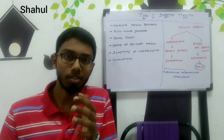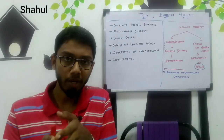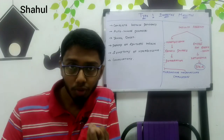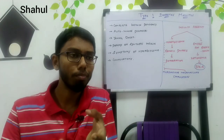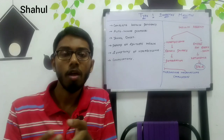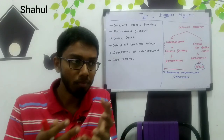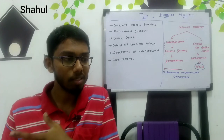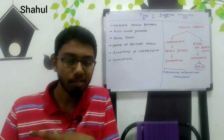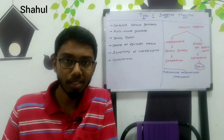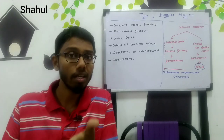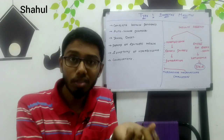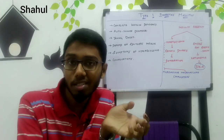We know that we have two types of diabetes mellitus: Type 1 and Type 2. Type 1 diabetes mellitus is caused by an autoimmune disorder where we develop immunity against our own beta cells. Lymphocytes and antibodies are produced against these beta cells, and they attack them, causing inflammation in the pancreas and destruction of the beta cells.